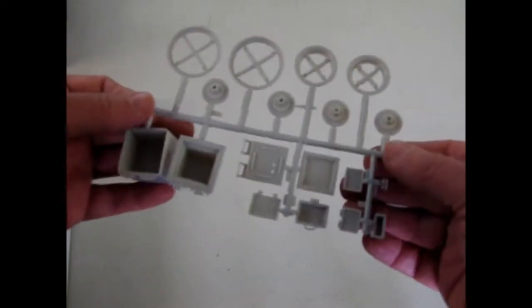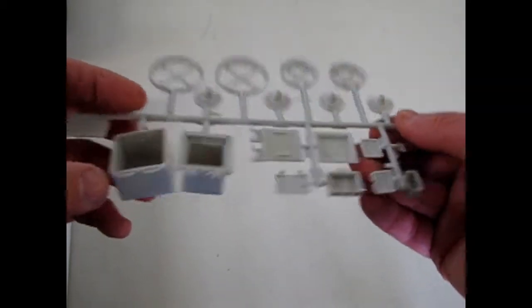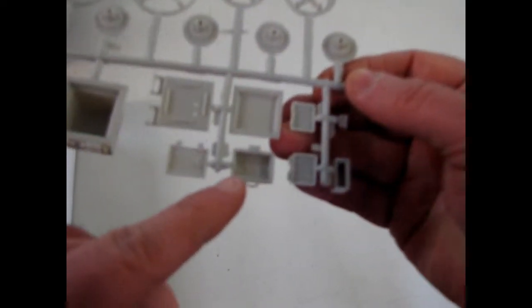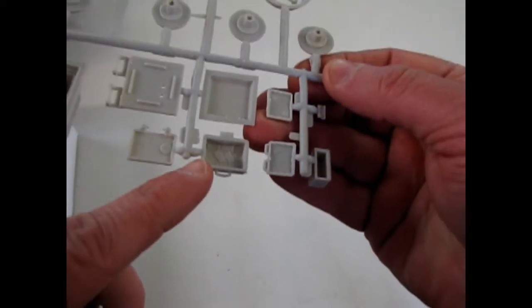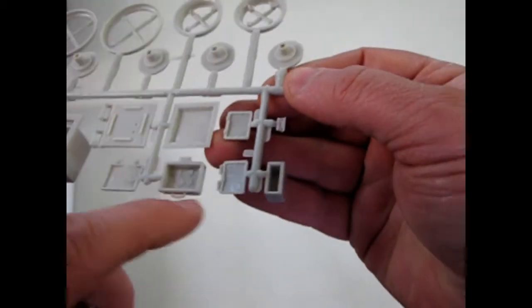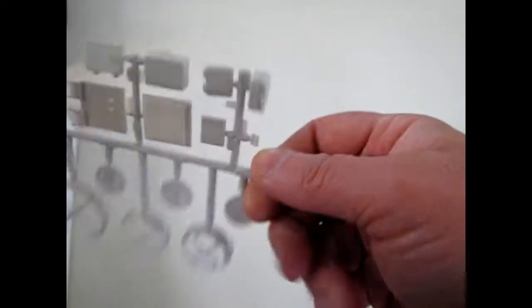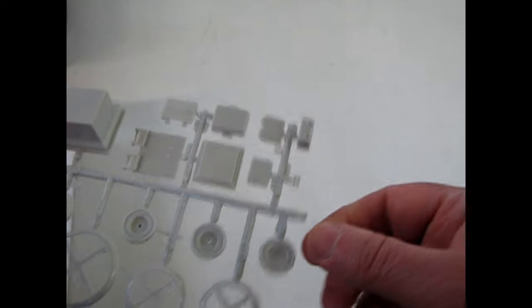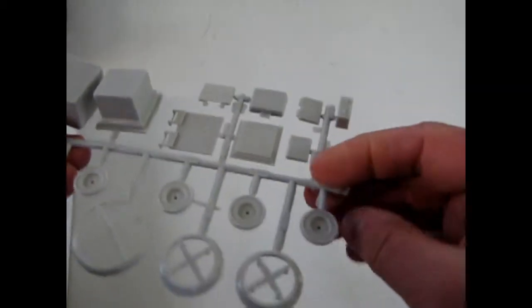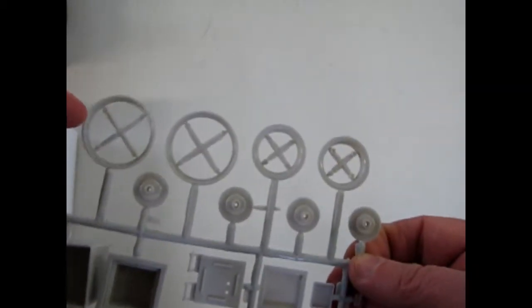And here are the safe, the suitcase, and you can see the stacks of money in there, and the little briefcase for your diamonds, the car battery, the brakes, and these are the spare tire cover pieces.